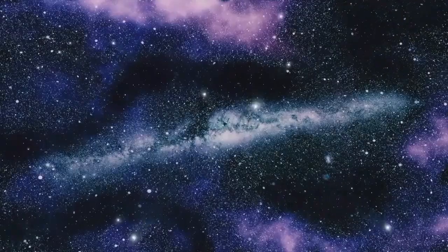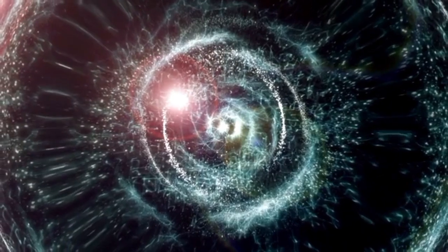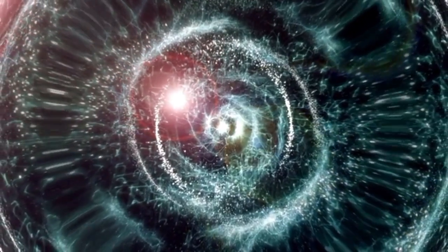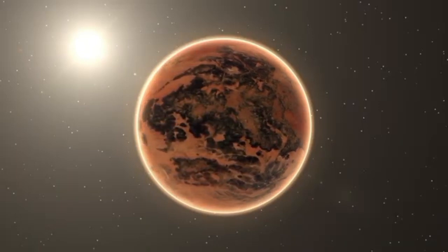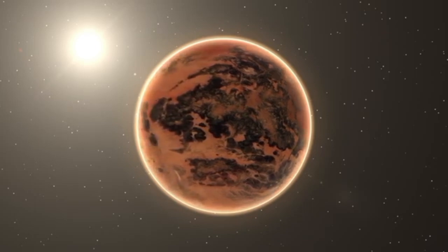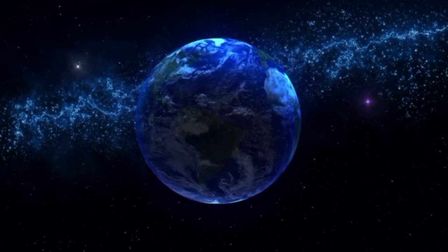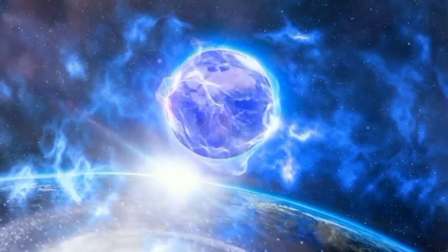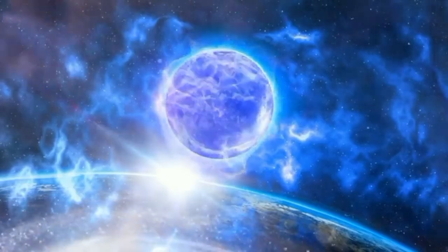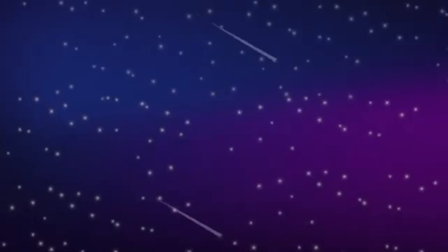Although Betelgeuse's supernova is not expected to cause harm to Earth, it will interact with our planet's atmosphere and magnetic field in intriguing ways. The energy burst, especially cosmic rays and charged particles, could create larger and more intense auroras in regions where the northern and southern lights are visible. Cosmic rays may temporarily disrupt satellite communications and some technology on Earth, but such disturbances are expected to be minor and short-lived.